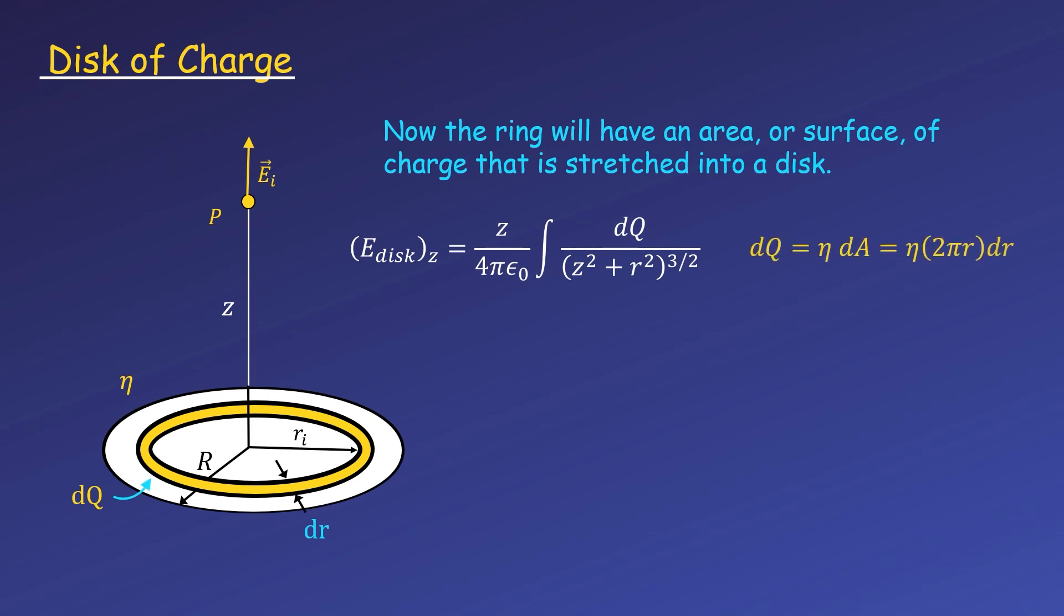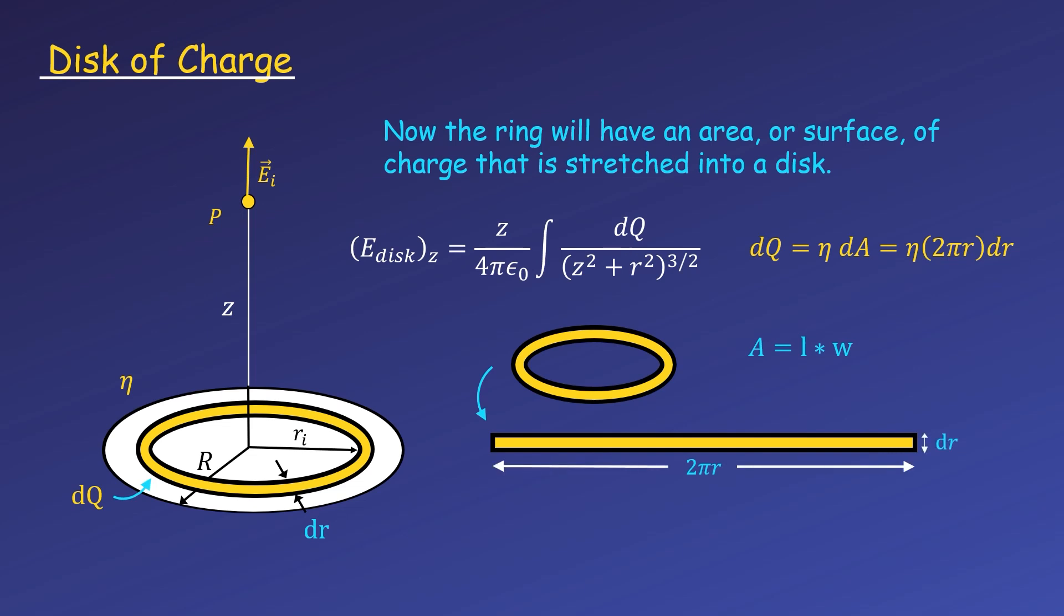We can write the small amount of charge in each ring as the surface charge density times the area of the ring. To get the area of the ring, we can imagine cutting the ring and rolling it out into a rectangle. The length of this rectangle will be the circumference of the ring, 2πr, and the width is the small length dr. We can factor out the constants from the integral and integrate radially from 0 to R.